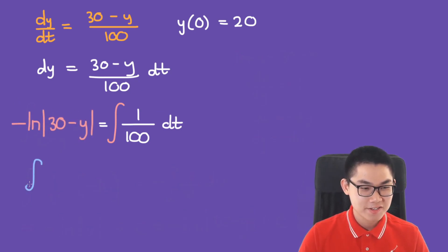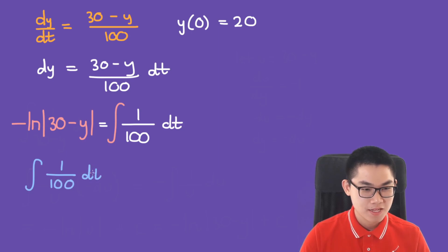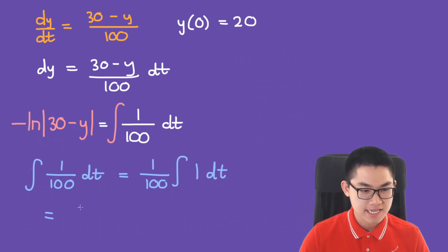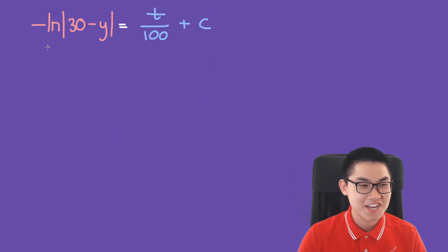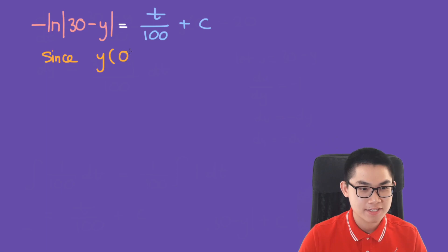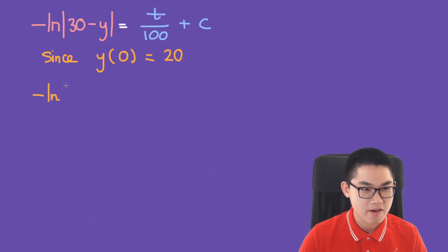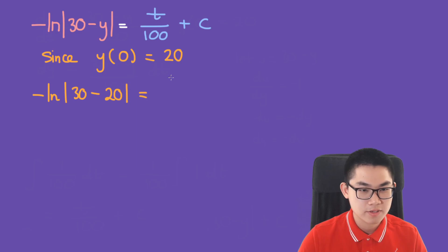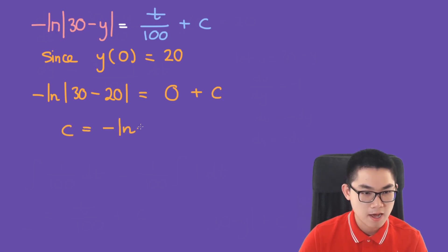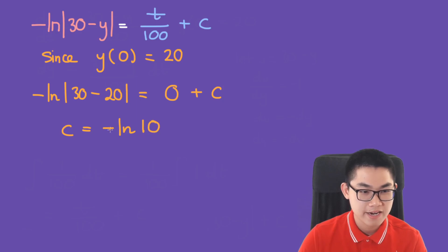For the right side, the integral of (1/100) dt equals t/100 + C. Now solving for C using y(0) = 20: substituting in gives −ln|30 − 20| = 0/100 + C, so C = −ln(10). Since 10 is positive, we don't need the absolute value and write C = −ln(10).